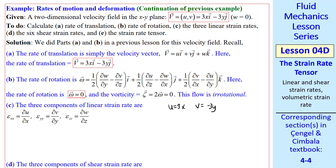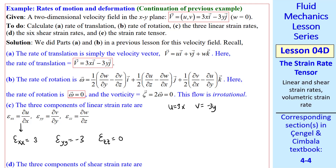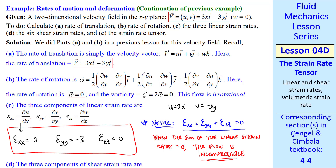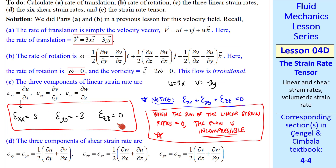Now let's calculate the three components of linear strain rate. Here u equals 3x and v equals minus 3y. So ε_xx is ∂u/∂x, which is just 3. We assume the constants have units that make the equations dimensionally consistent. Similarly, ε_yy is ∂v/∂y, which is negative 3, and ε_zz is zero since this is two-dimensional. As a side note, notice that ε_xx plus ε_yy plus ε_zz equals zero. When the sum of the linear strain rates equals zero, the flow is incompressible — this is the case here, since 3 minus 3 plus zero is zero.